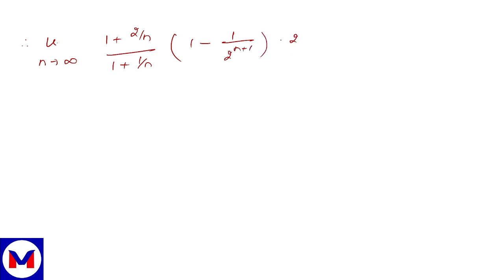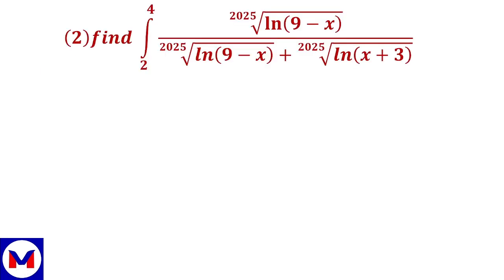Plus 1 into 2, and this will become 0, this will become 0, giving 1, 1 minus 0, then 1 into 2 — that is the limiting value will be 2. This is the required answer of the given question, and I hope you understood it. We will move to the next problem.